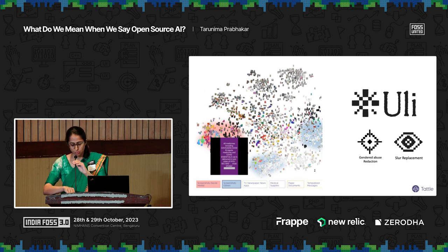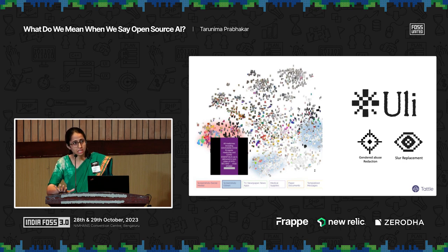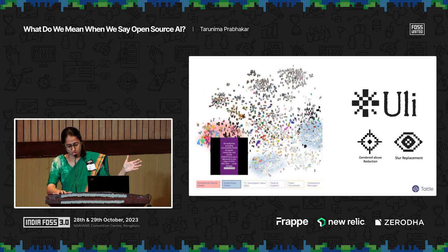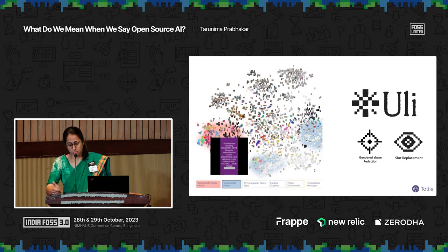At many points in the last four years, as we've tried different machine learning-driven experiments, I have paused and asked my teammates: can we justifiably say that our work is open source? This is even in the pre-large language model days. Machine learning development has meant that we've relied on pre-trained models. For example, we have an analysis engine called Feluda — the visualization on the left is what Feluda has produced — and Feluda relies on ResNet and also on the Google Cloud Vision API. ULI, another project for detecting gendered abuse in Indian languages, relies on a BERT-based model.